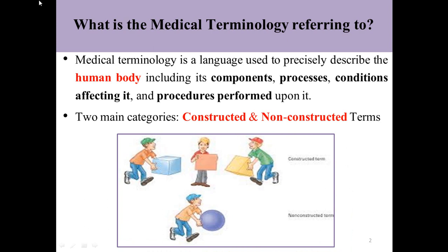We have to collect different words or parts of words to give a meaning — that is the constructed term. The other category is the non-constructed term.